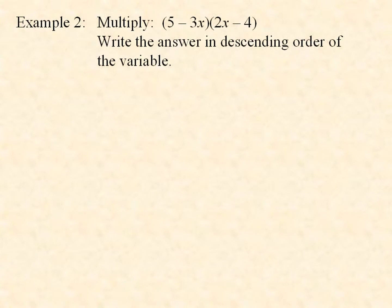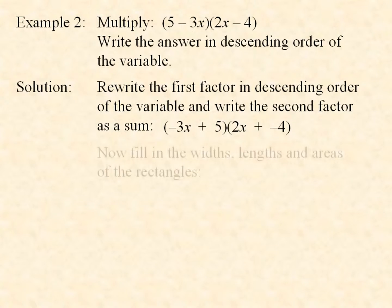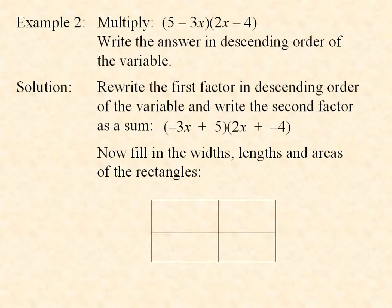Example 2: Multiply the quantity 5 minus 3x times the quantity 2x minus 4, and write the answer in descending order of the variable. First, we will rewrite the first factor in descending order of the variable, and we will write the second factor as a sum. So we have the expression negative 3x plus 5 times 2x plus negative 4. Again, we draw a split rectangle, where the width consists of negative 3x and 5, and the length of 2x and negative 4.